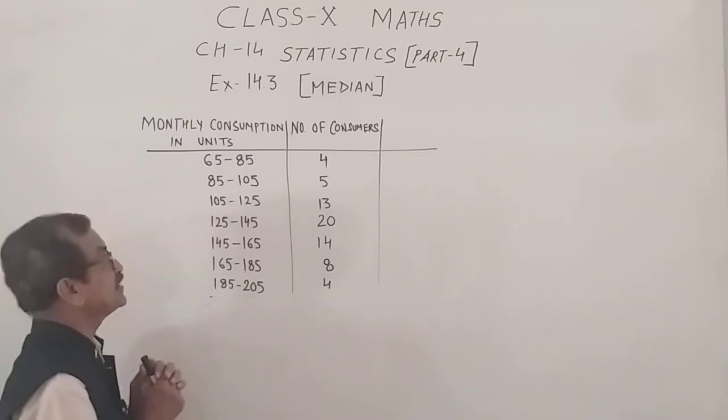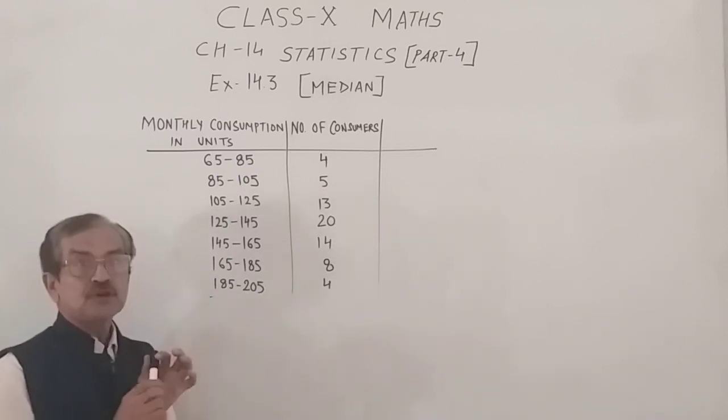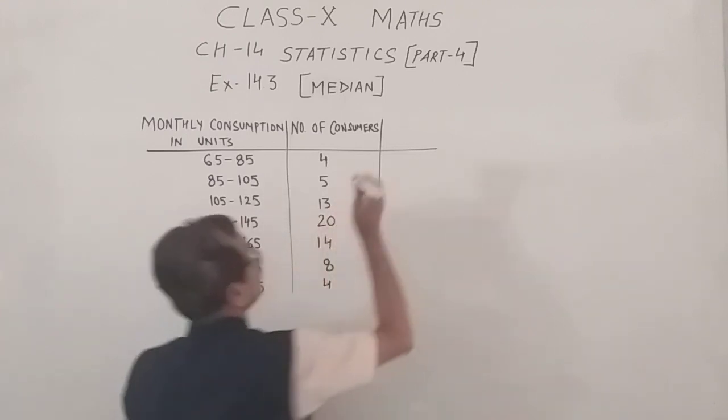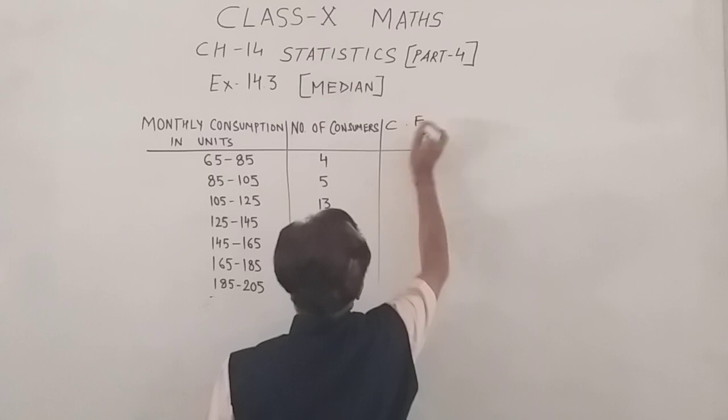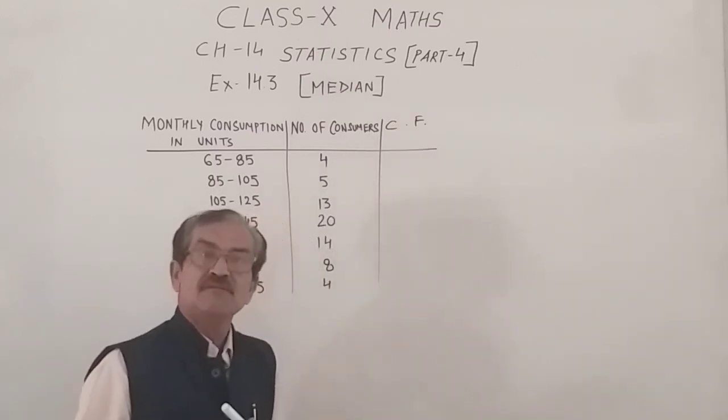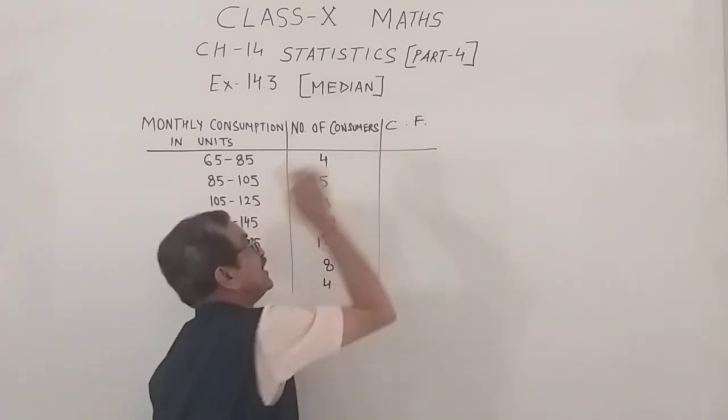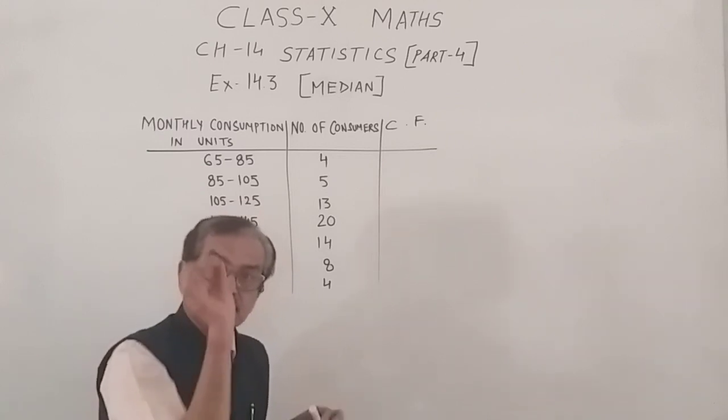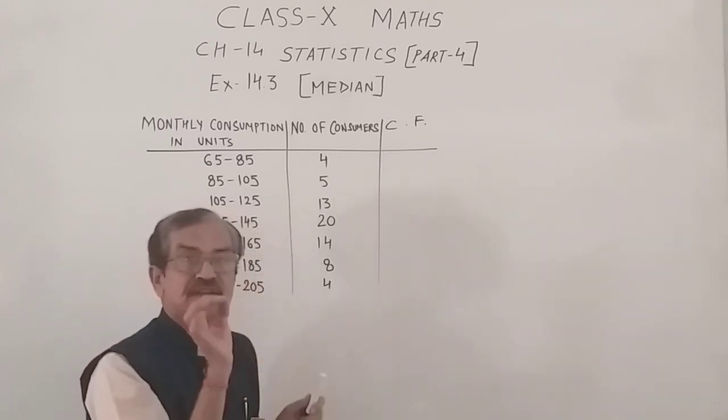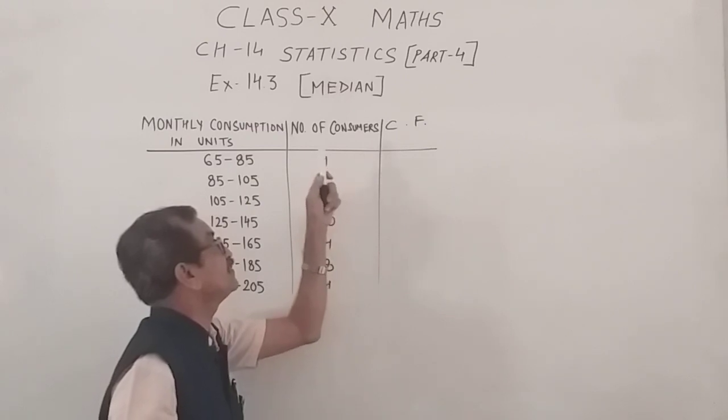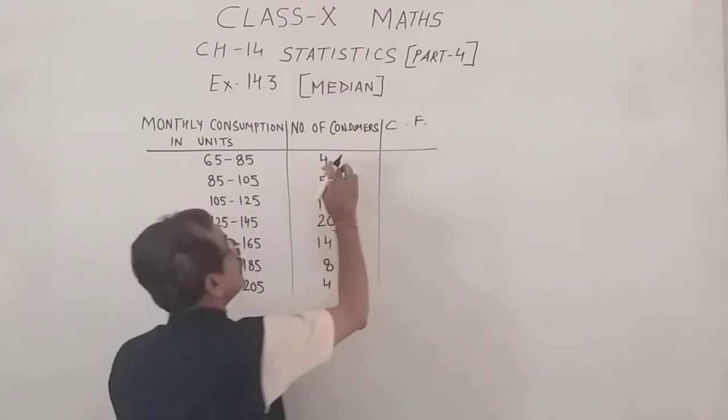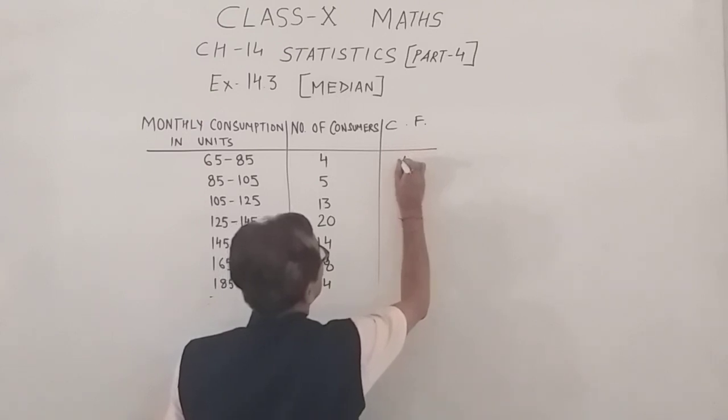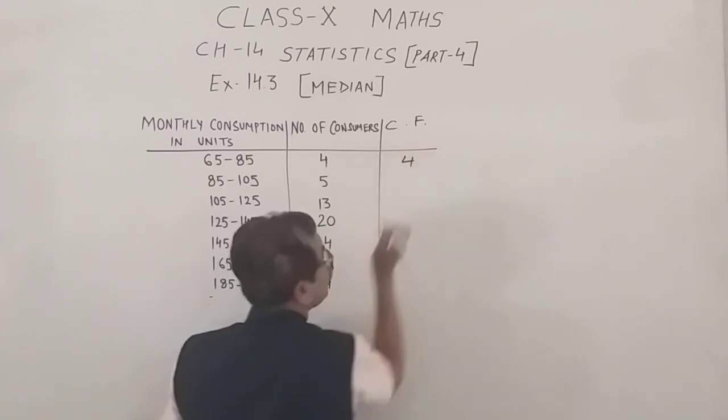For that, we will have to find cumulative frequency. CF, cumulative frequency. The cumulative frequency is the sum total of the frequencies of the classes preceding and of this class. That means, here we have 4. So, for first class, the sum is 4.